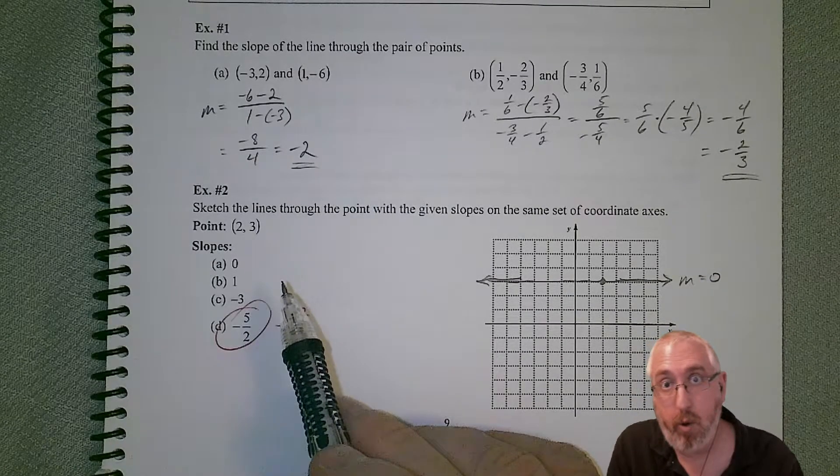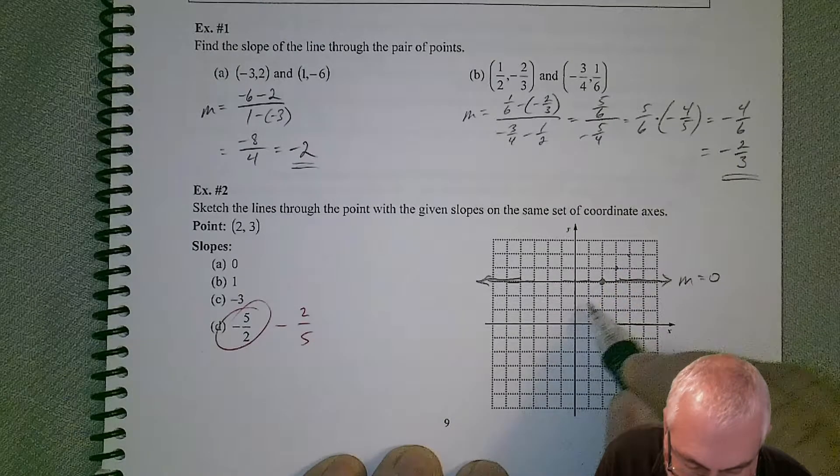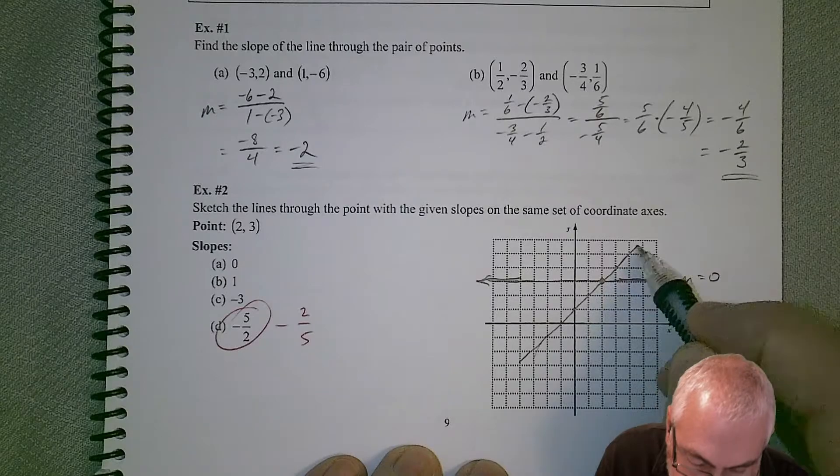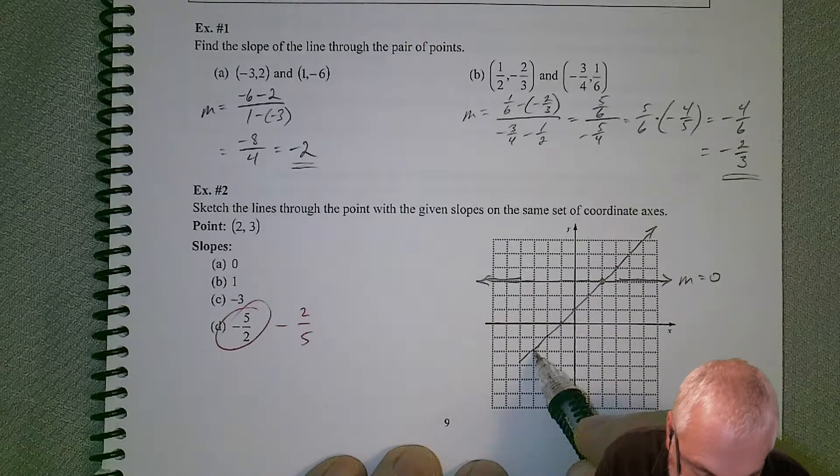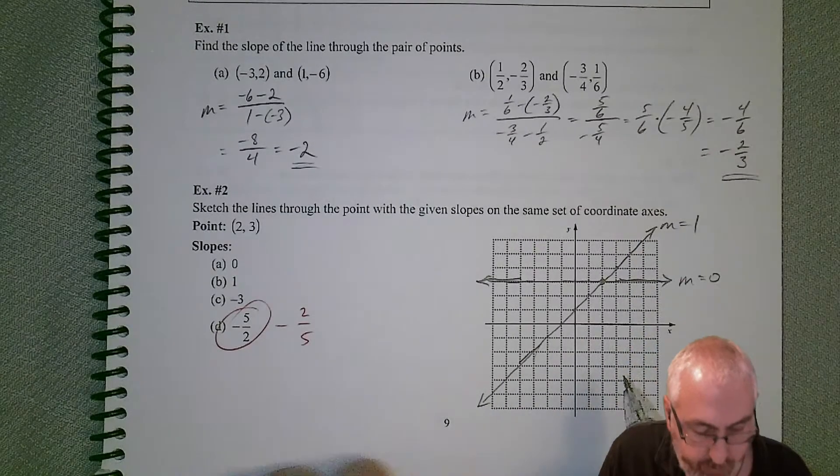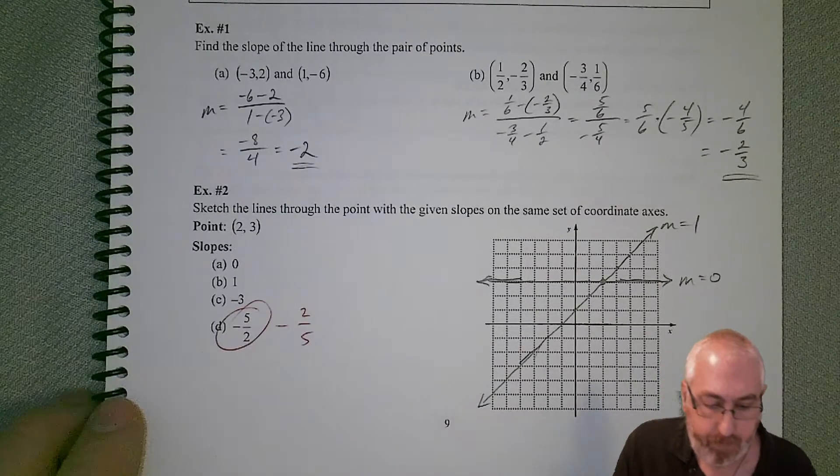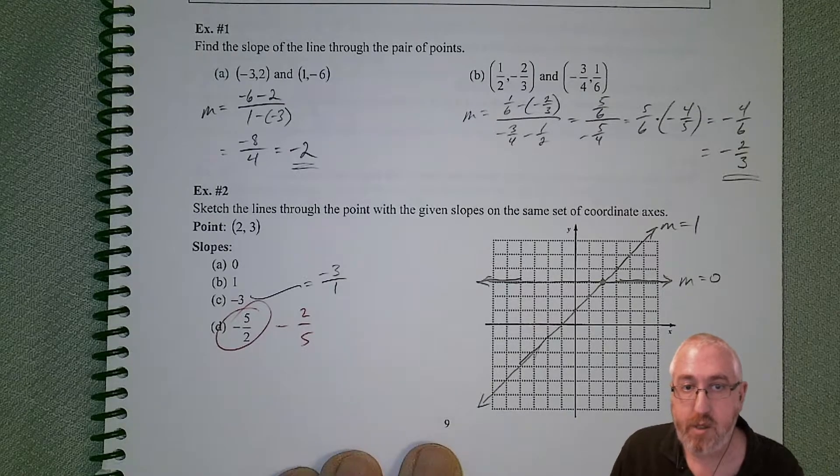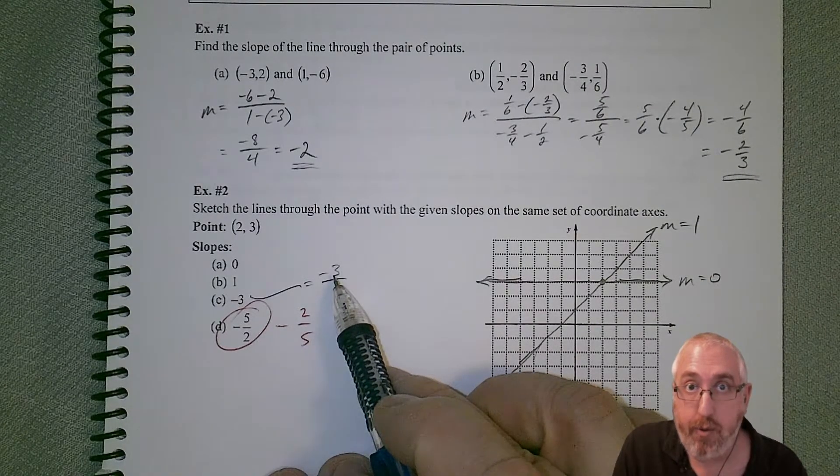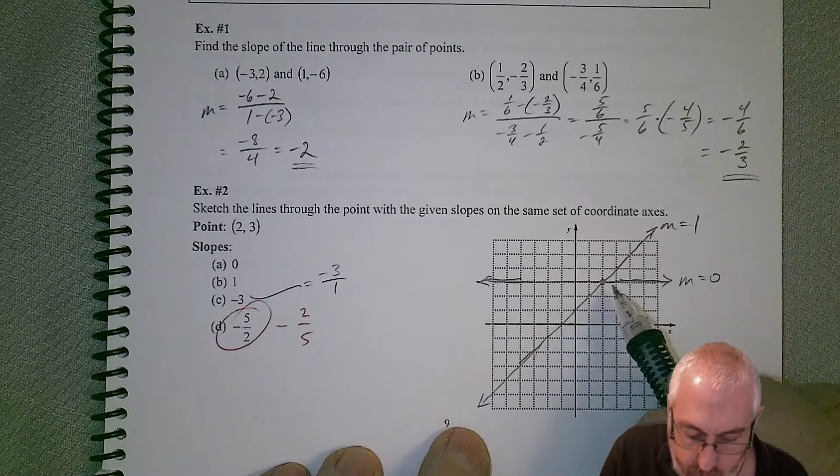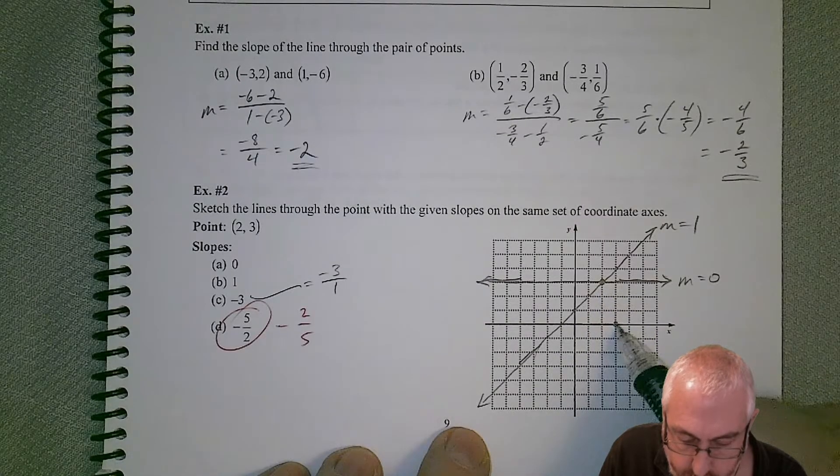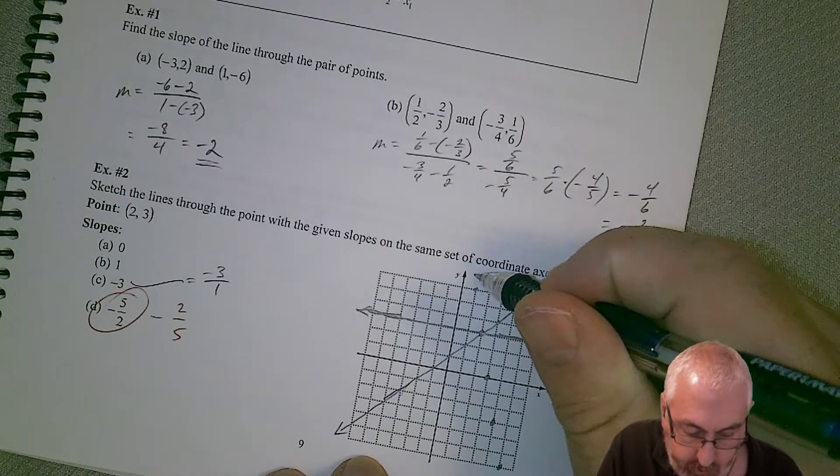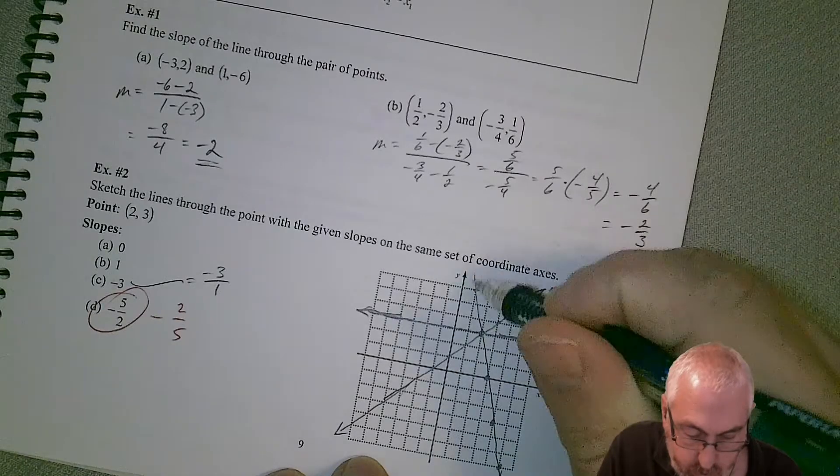Slope of 1, so over 1, up 1. We can get a couple of points in here just to kind of guide us a little bit. So something like that. There's M equal to 1, a negative 3. Another way that we can think of this is that this is a negative 3 over 1. That means we're going to be going down 3 units for every 1 unit to the right. So down 3 over 1. Down 3 over 1.